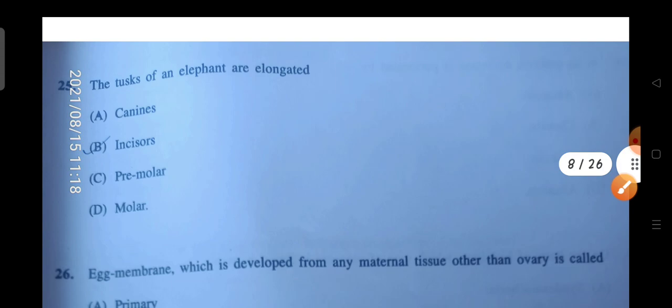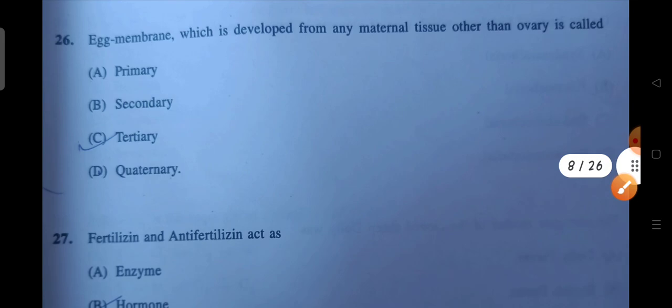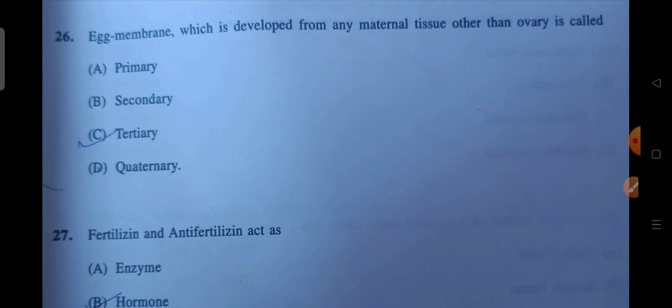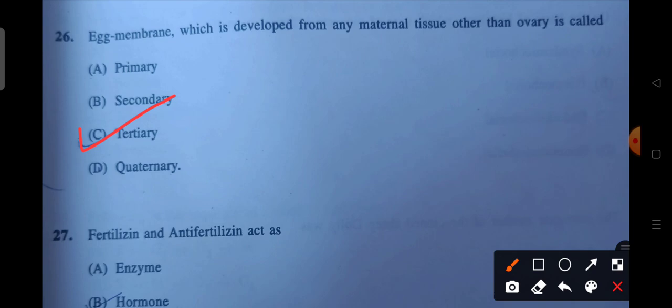Next question: the tusks of an elephant are elongated. So what are they? Canines, incisors, premolars, molars. So they are incisors. B will be the correct answer. Next is egg membrane which is developed from any maternal tissue other than the ovary is called tertiary. C will be the correct answer.